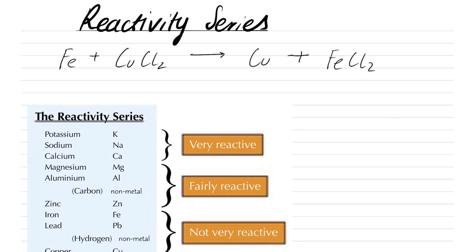Now, why does this reaction happen? Well, we know that this reaction is a displacement reaction. So this iron will kick out this copper, and this copper will become on its own, and then the iron will remain here with the chloride.